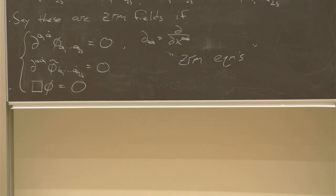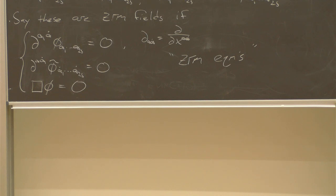— Do you mean conformally covariant or conformally invariant? — I mean in the sense that if you solve the equation in one conformal frame, the conformally transformed solution solves the zero rest mass equations in the other conformal frame. It's conformally covariant, right? It's conformally covariant, but there's a zero on one side of the equation.